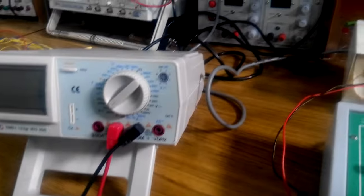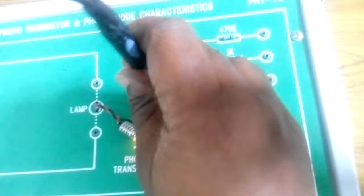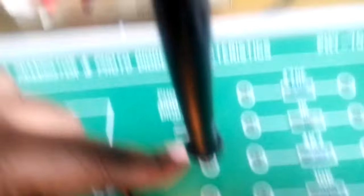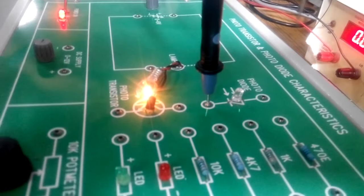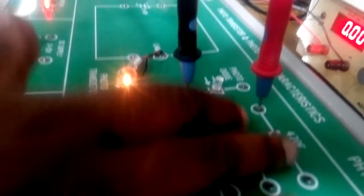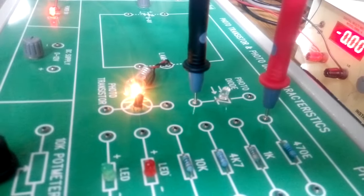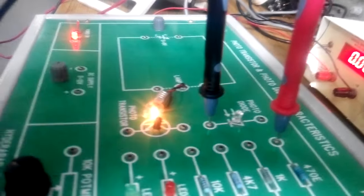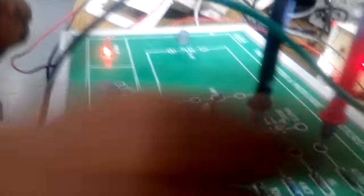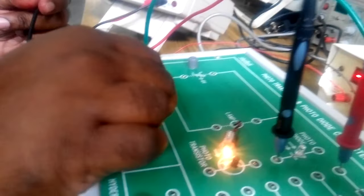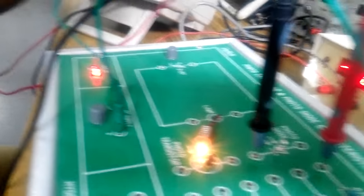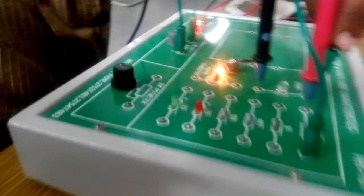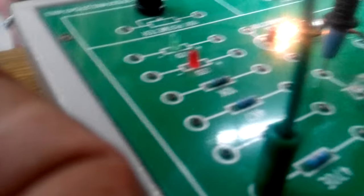Connect the ammeter negative to the photodiode as shown over here. From the ammeter positive, connect it to the 470 ohms resistor. From the 470 ohms resistor, connect it to the voltage source positive. From the voltage source negative, connect it to the other end of the photodiode.